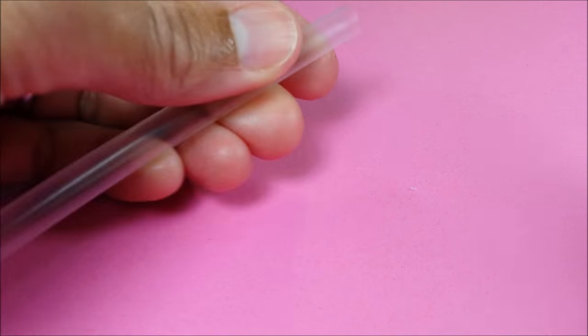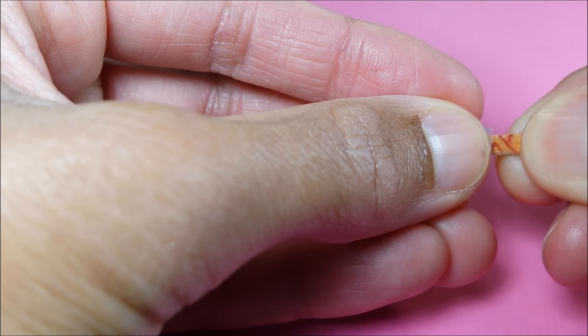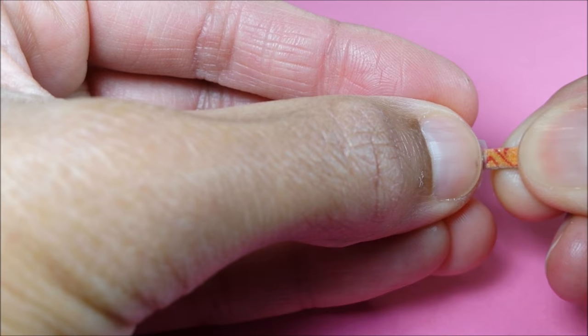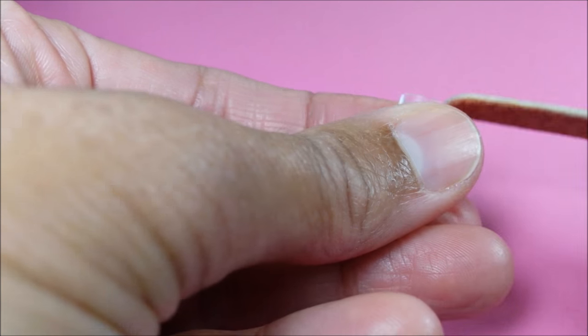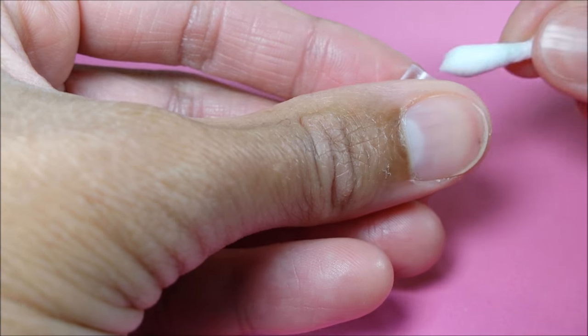So I start with a clear straw and I'm just cutting off a small piece. I file the insides along the top and bottom, and then file the top and bottom. Cleaning out any dust with a q-tip.